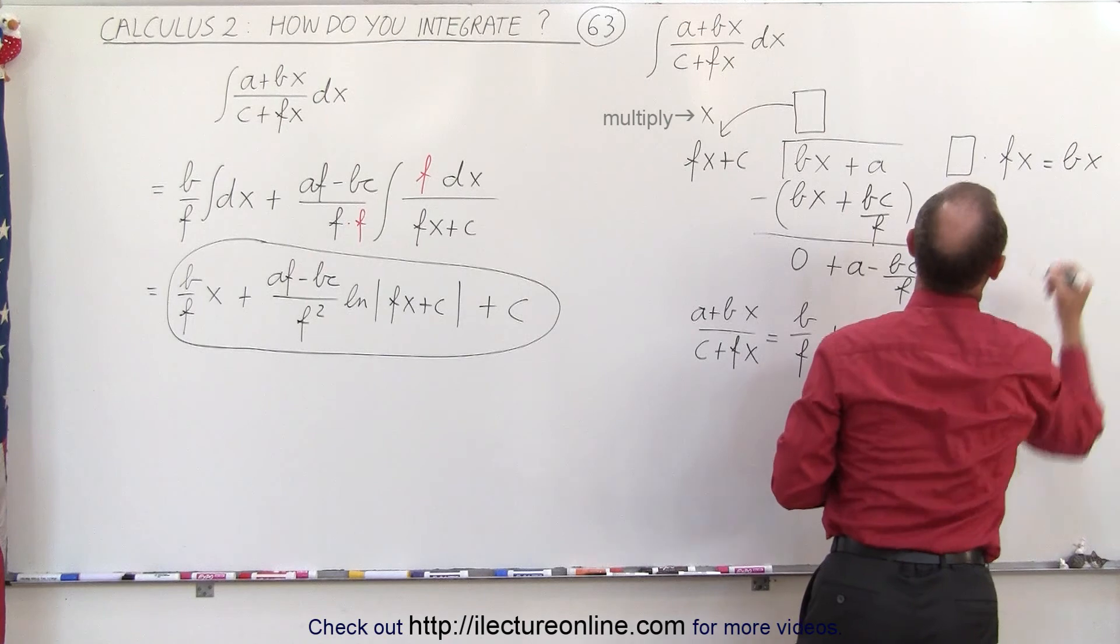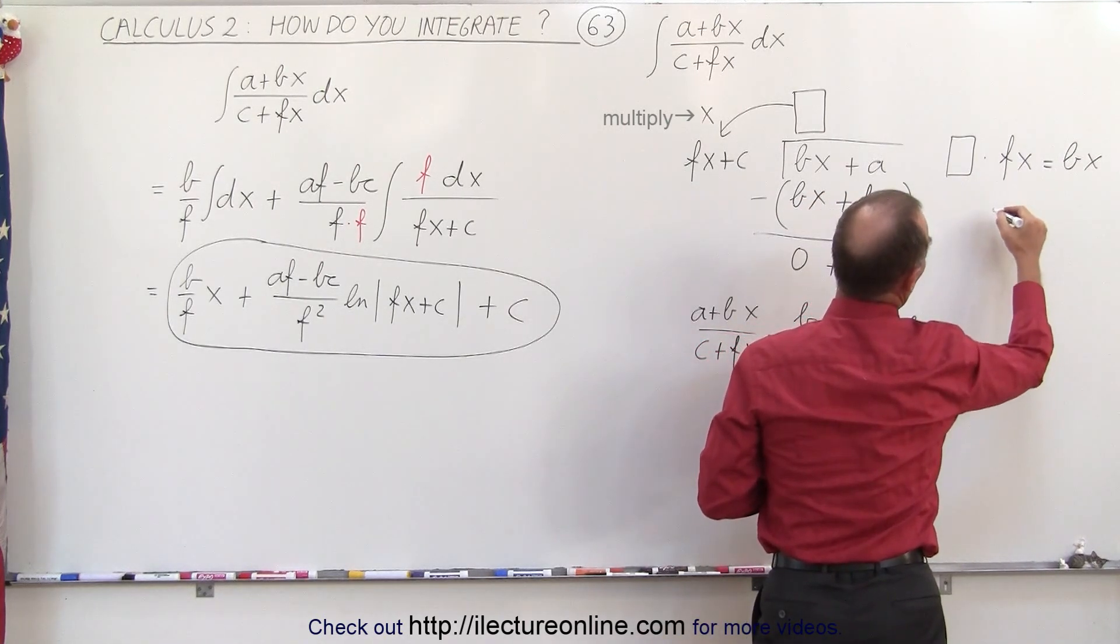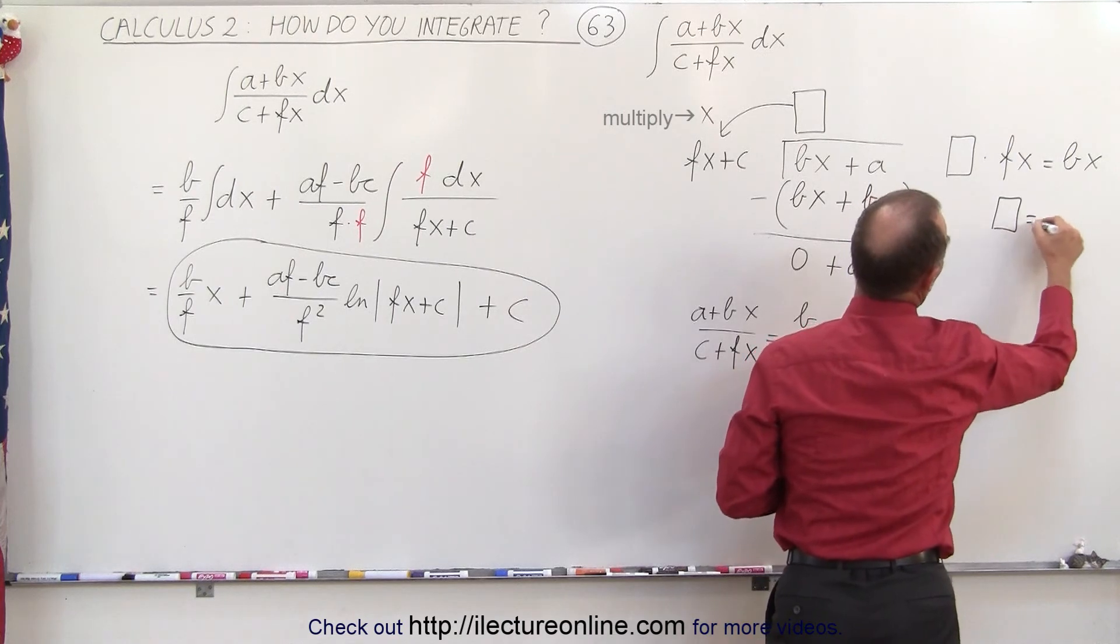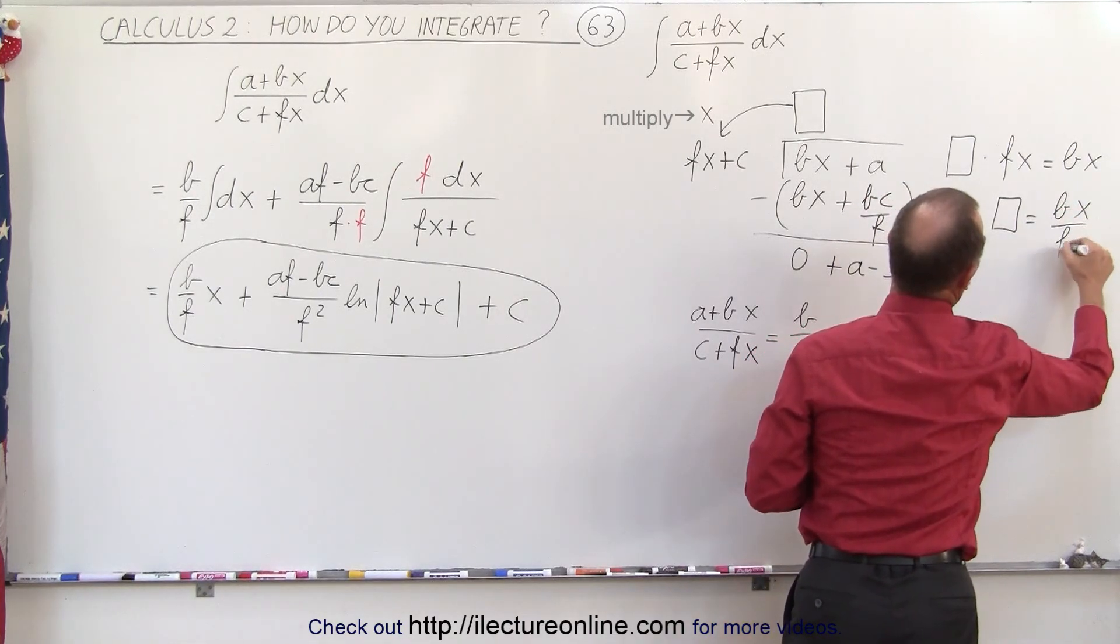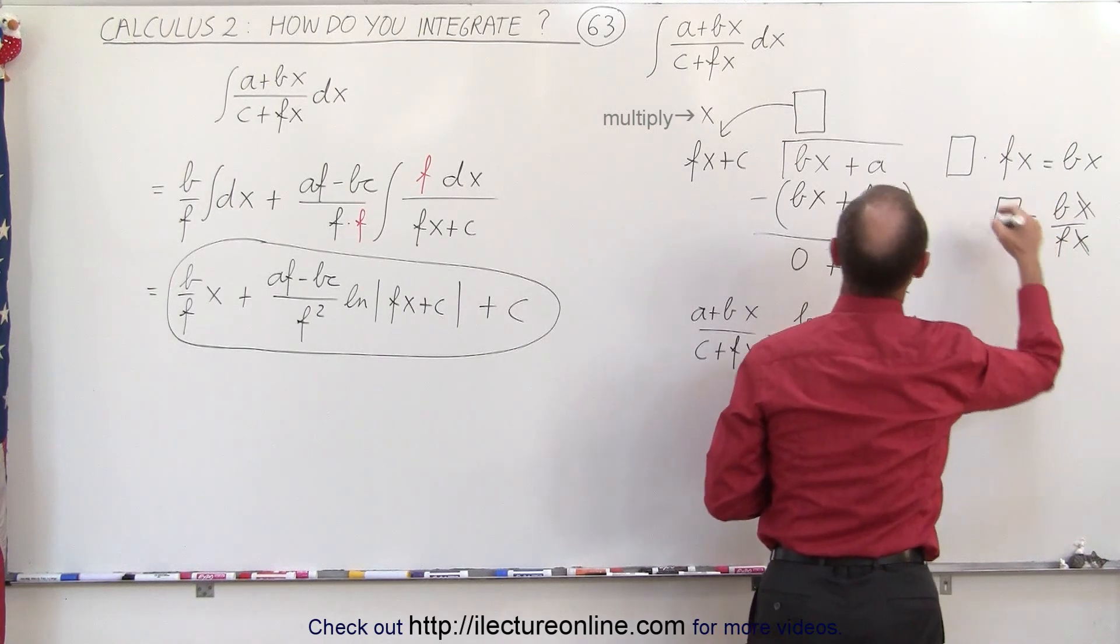And so notice that if you divide both sides of this equation by fx, we have a box is equal to bx over fx, and since the x is then canceled, the box is simply b over f. So that's what we need here.